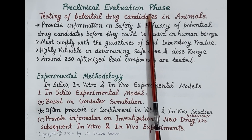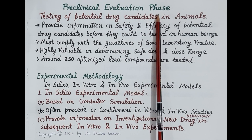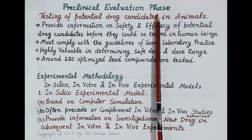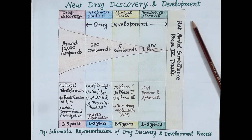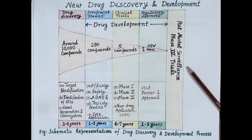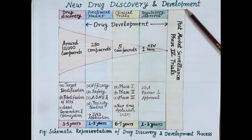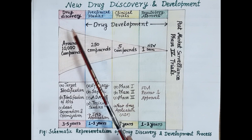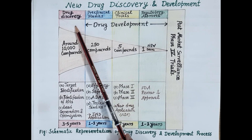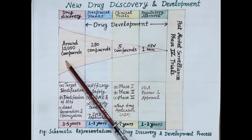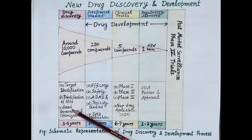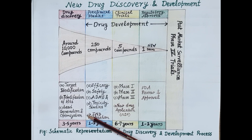Hello students. In today's video we are going to discuss the preclinical evaluation phase. This video is fourth in the series of videos on new drug discovery and development. The entire process has two main stages. The first stage is new drug discovery, during which around 5,000 to 10,000 active compounds are screened, leads are generated, and these leads are further optimized to produce the most potential drug candidates.